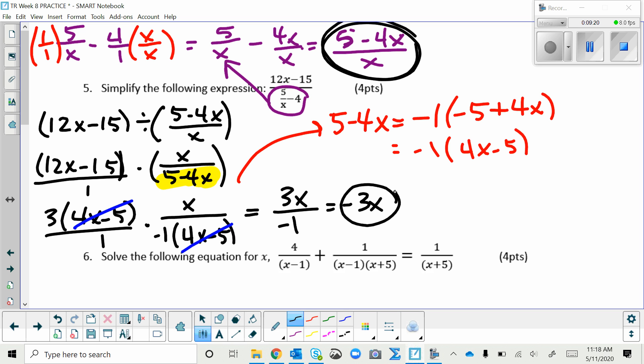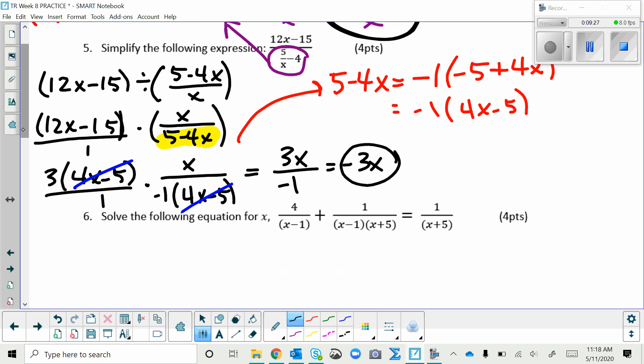And then number 6, solving the rational equation. We need to get all the denominators the same. So this is our goal to get all the denominators to look like that. So this one to look like that needs to be multiplied top and bottom by X plus 5. And in order for this one to look like that, I have to multiply top and bottom by X minus 1. Now that all the denominators are X plus 5, X minus 1, I can just drop them off.